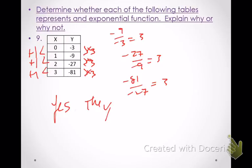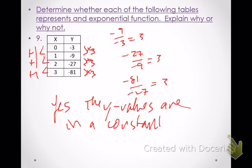The y values are in a constant ratio. An easy way to check: first try adding the same number each time to your y's to see if there's a constant difference. If not, start dividing consecutive y values to see if there's a constant ratio.